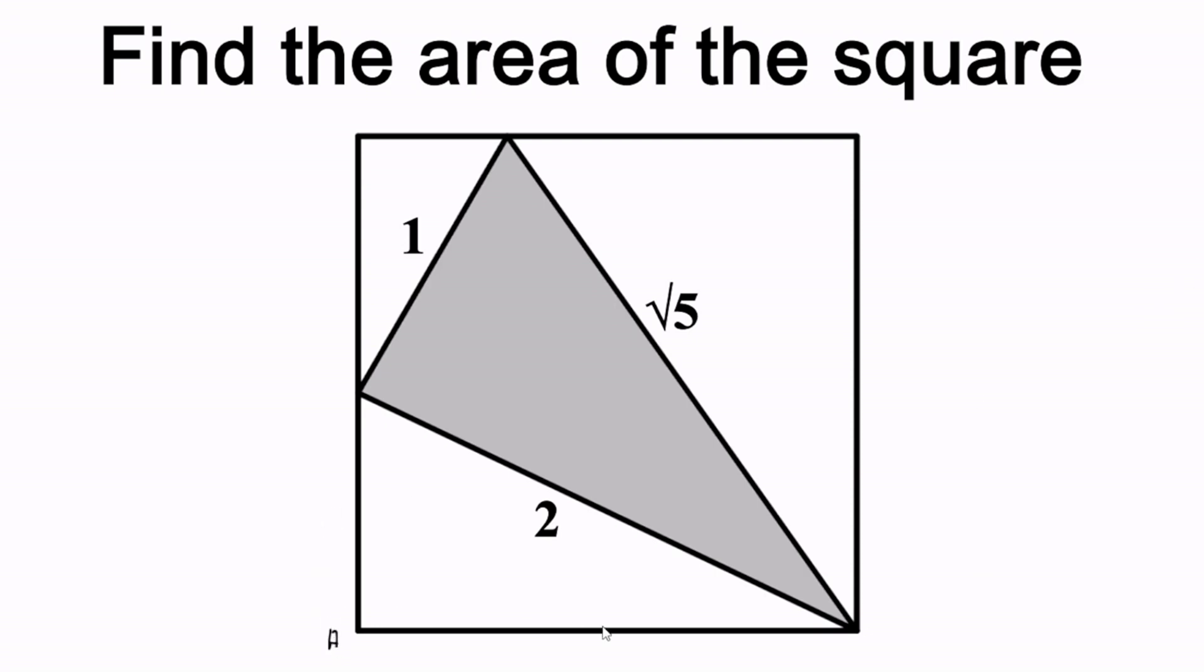As we can see, we have a square here. I'll call my square ABCD. And in our square, we have a shaded triangle. So I'll call this point E and I'll call this point F. And we know the side lengths of our triangle. Our triangle has side lengths of 1, 2, and the square root of 5.